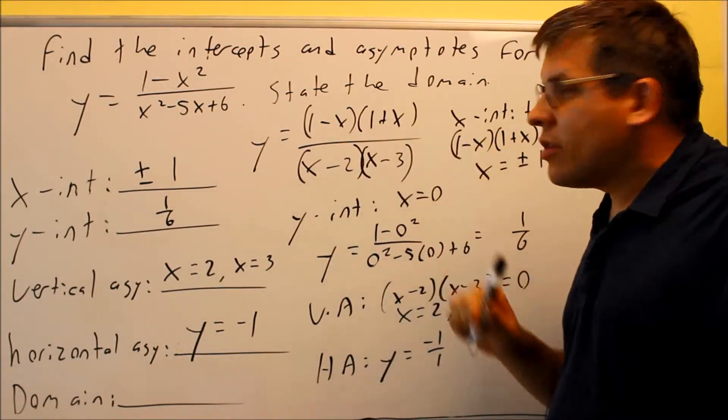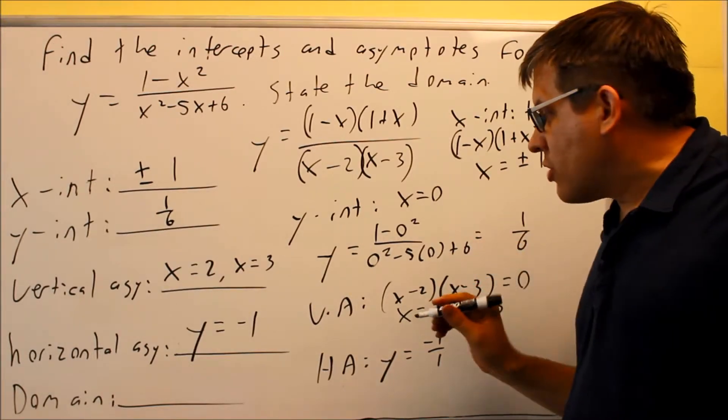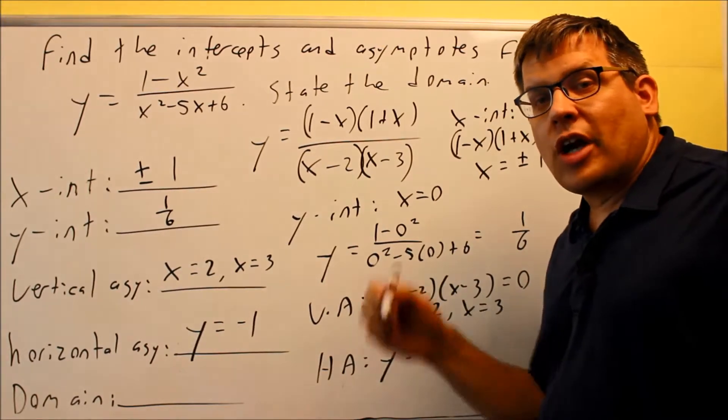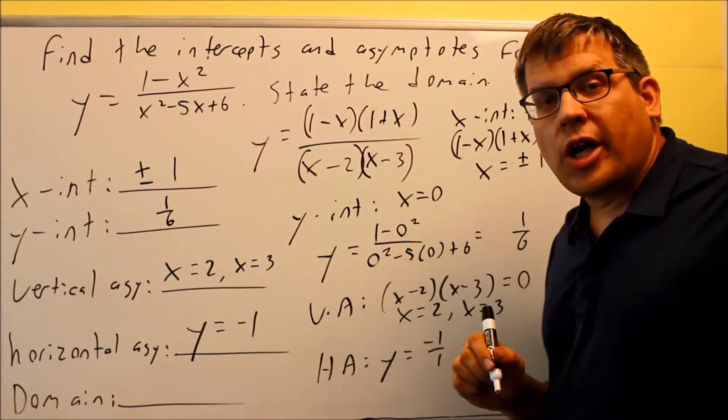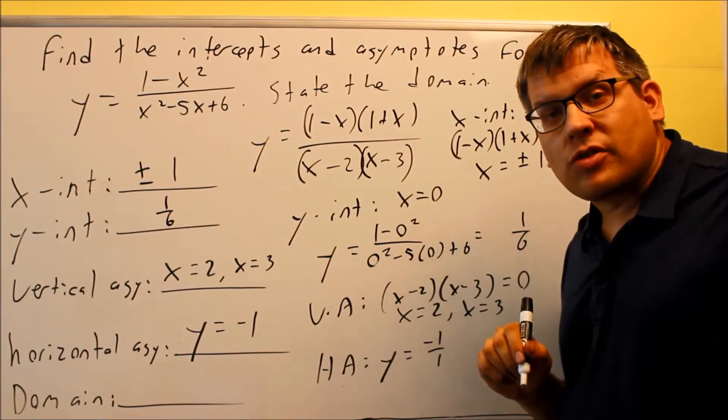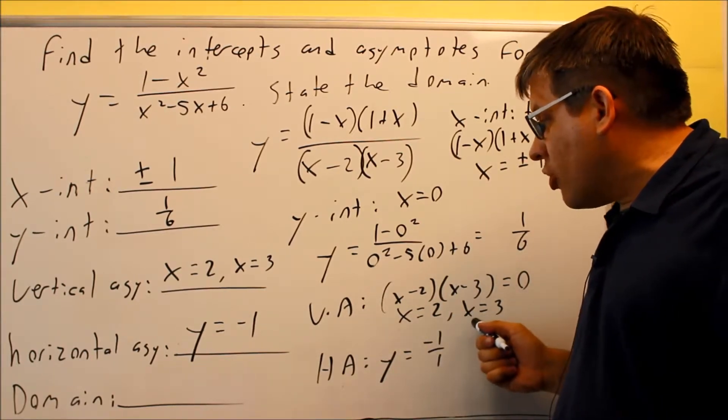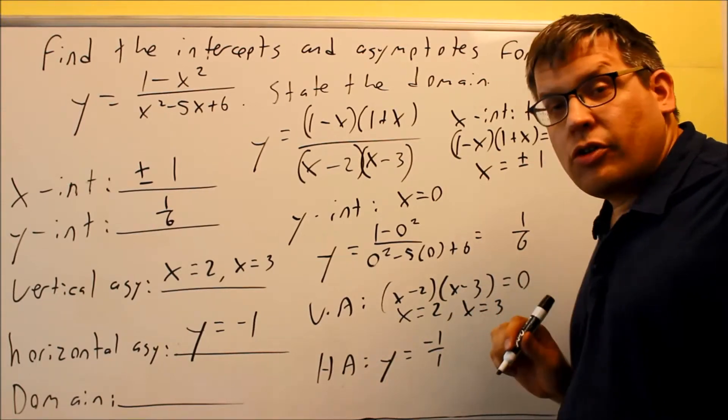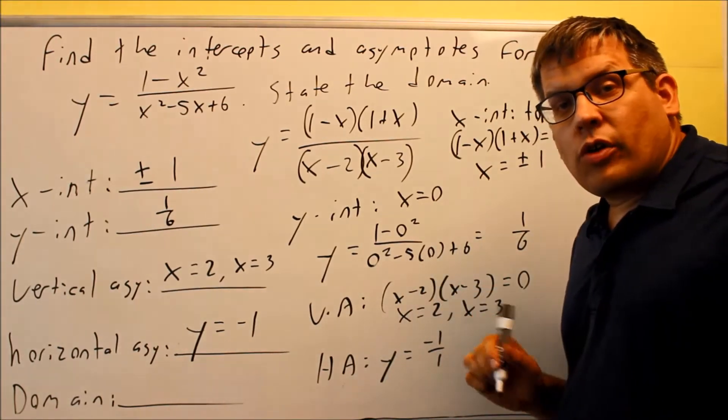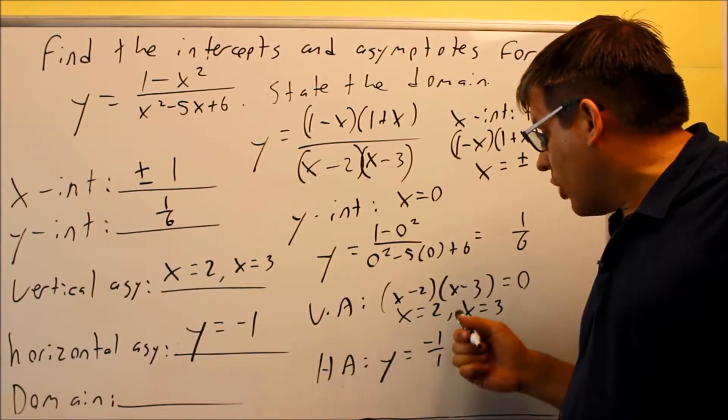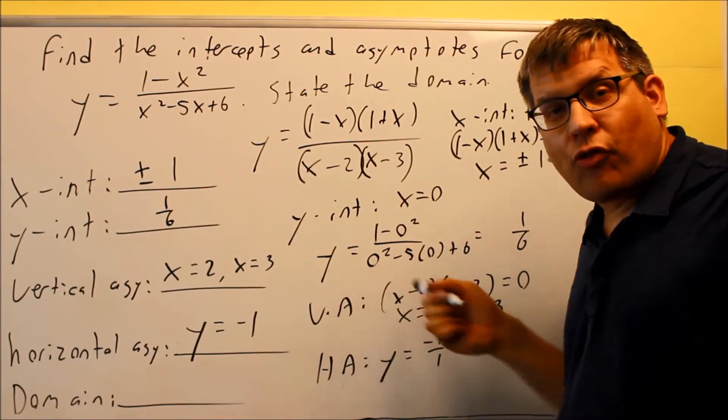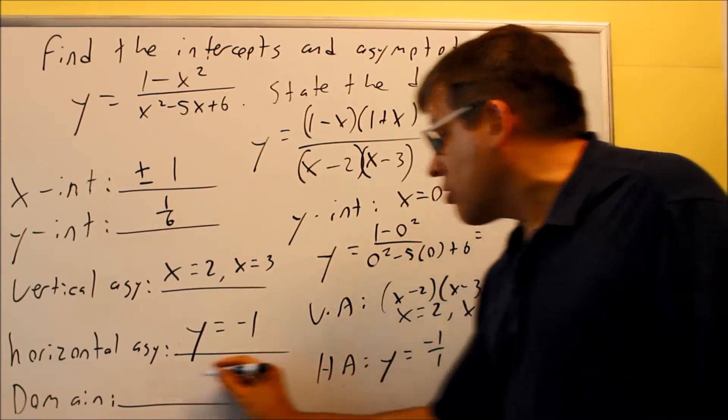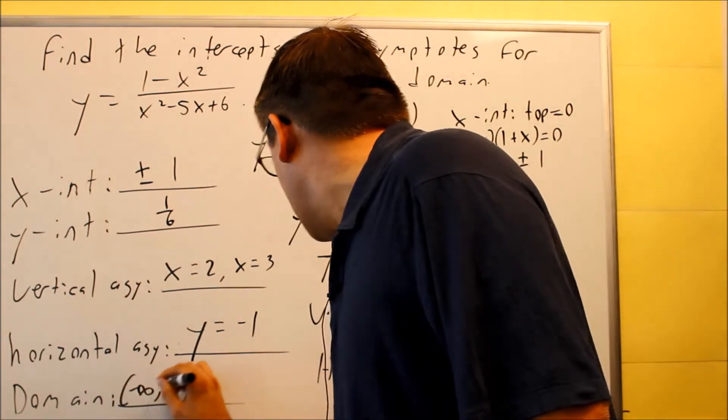The last thing they want us to do is they want to state the domain. The domain is actually going to go along with your vertical asymptotes. Wherever you have a vertical asymptote, that number is not allowed in your domain because you end up dividing by 0. So both these places here, basically, your domain is going to be all real numbers, not including 2, not including 3. Typically, you want to write this out with interval notation. So the way that would work is you're going to include everything before 2, everything between 2 and 3, and everything after 3 is allowed. So here's what it would look like. Negative infinity to 2.